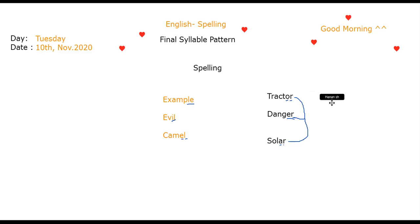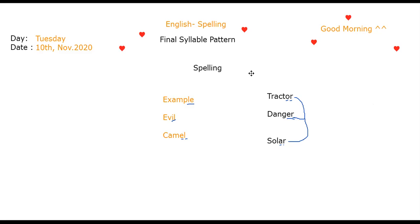Maybe somebody would ask: how do we understand the difference in writing between words when they all sound the same? What should we do? You have to memorize. That's why we have spelling — because each word that you take, I want you to write it several times, read it several times, and see it several times. Then you will memorize it and it will be stuck in your mind. That's also why we have dictation quizzes.